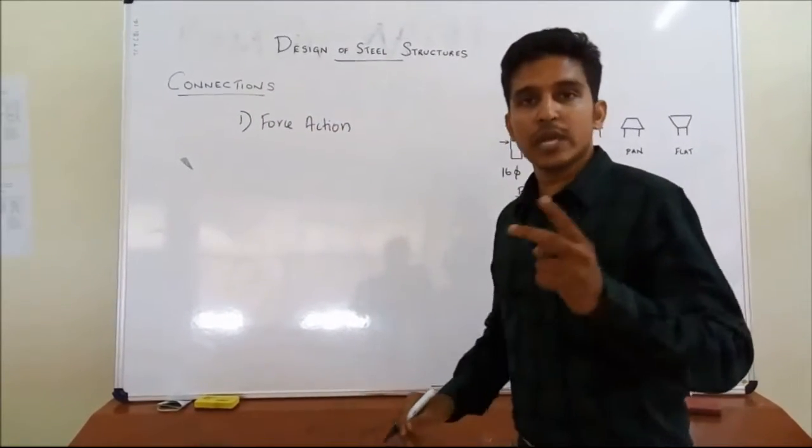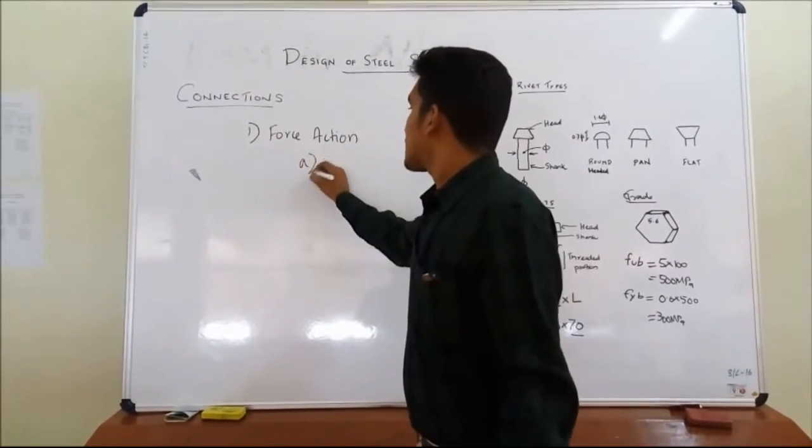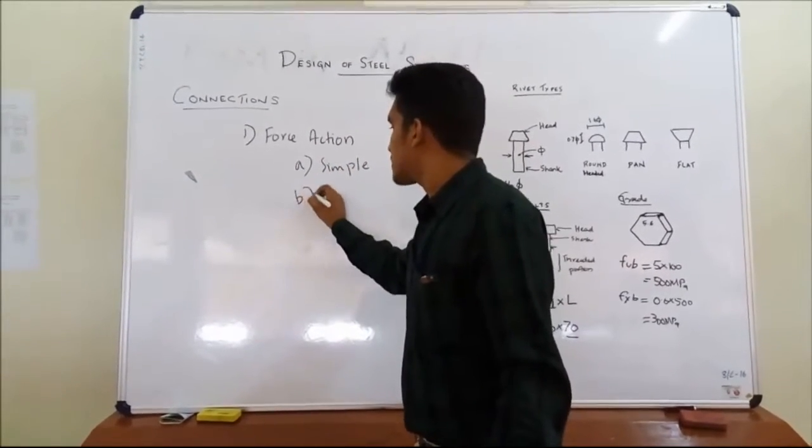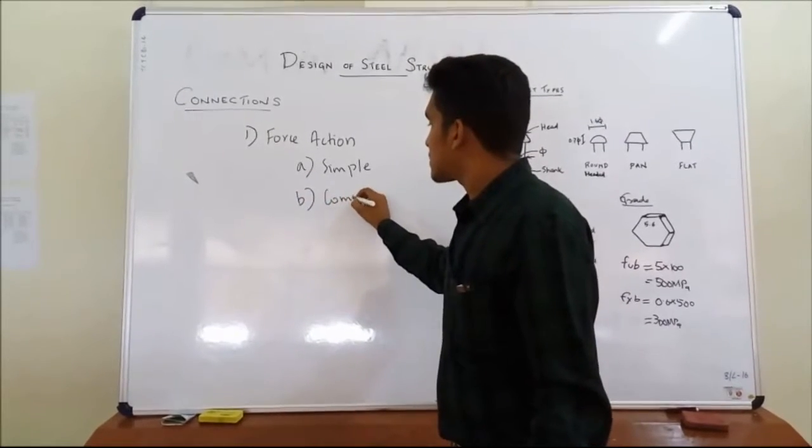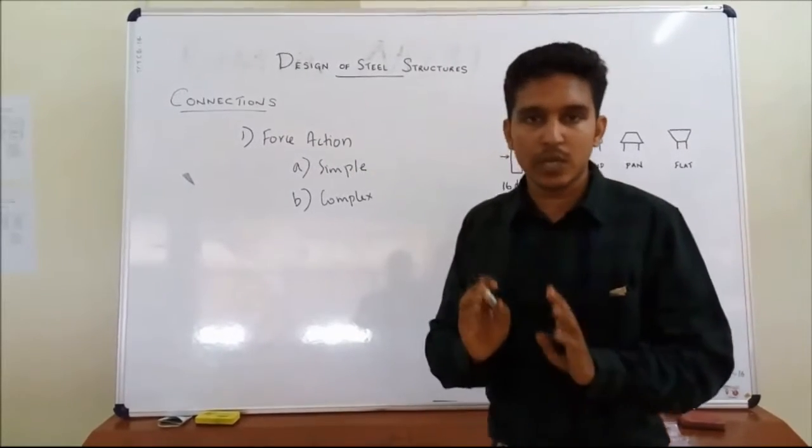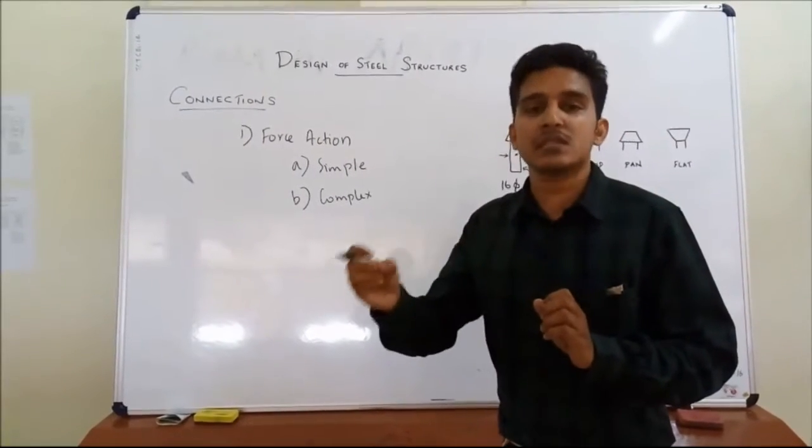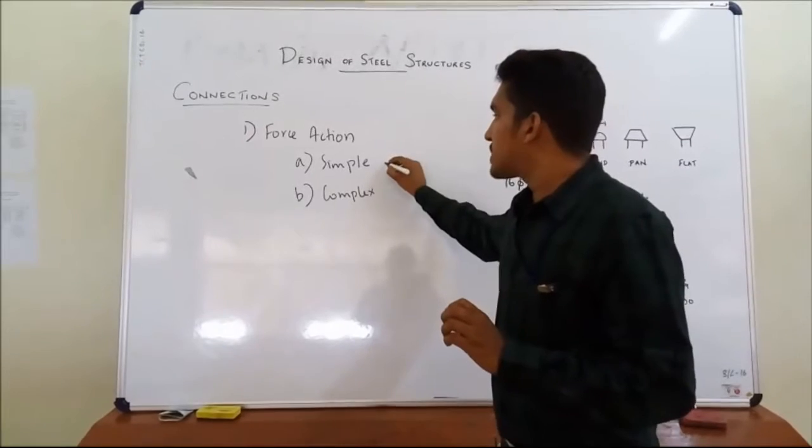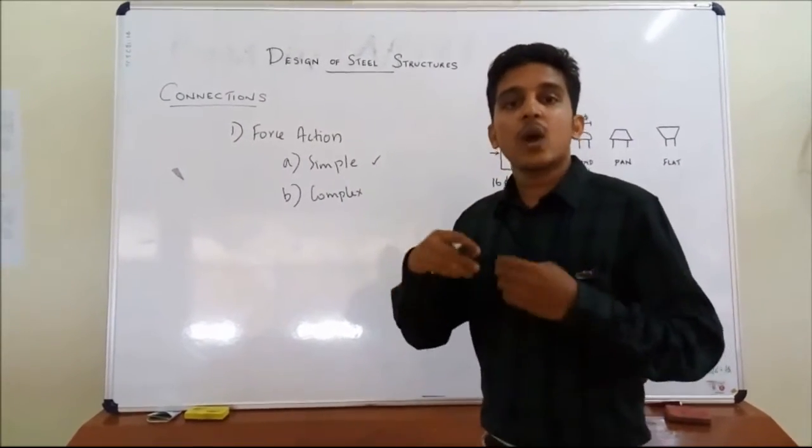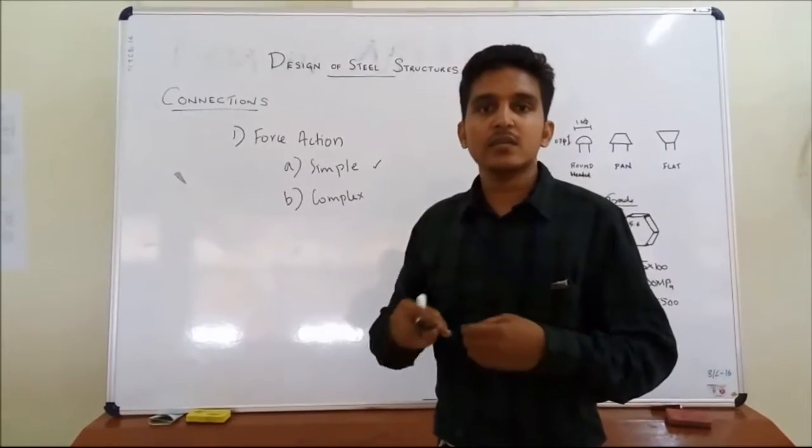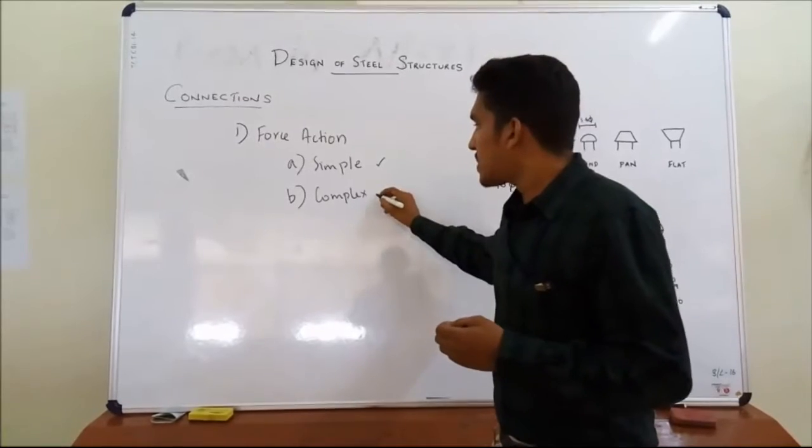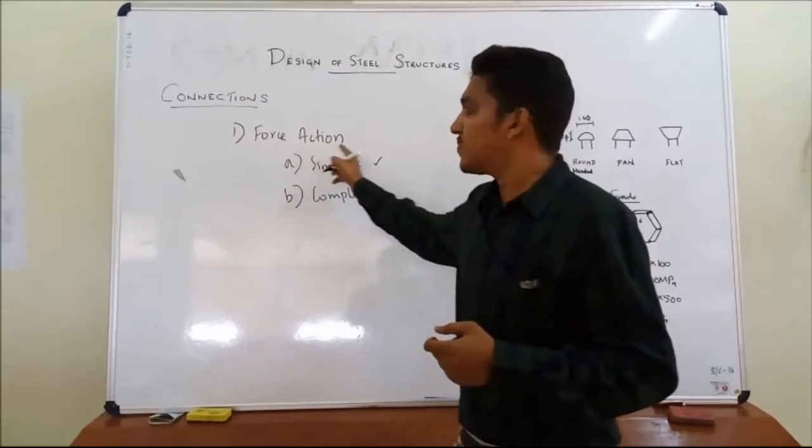Connections can be classified as, first one, based on the force action. Based on the force action, it can be of two types. First one is simple connection. Second one is complex connections. A simple connection means there is only one, a single type of load, a stress acting through it. Usually, the transfer of shear stress is common. Next one is complex type. The complex type of connections include complex eccentric loadings. That is, there is a tendency of creating moments in them. That is under force action.